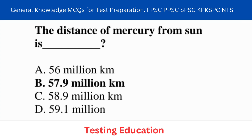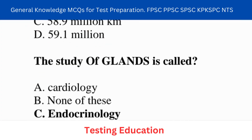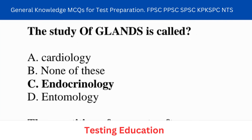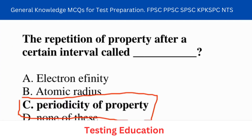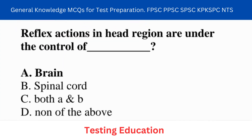The distance of Mercury from the Sun is 57.9 million kilometers. Next question: the study of glands is called endocrinology. Next question: the repetition of properties after a certain interval is called periodicity.